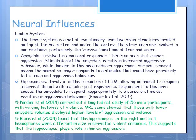Neural influences on aggression cover brain structure and neurochemistry. Looking at brain structure, we start with the limbic system, located at the top of the brainstem, generally associated with survival emotions such as fear and anger. One part linked to aggression is the amygdala — stimulation of this area leads to increased aggressive behaviour, while damage or surgical removal reduces it, meaning an animal no longer responds to stimuli that would previously have caused rage.